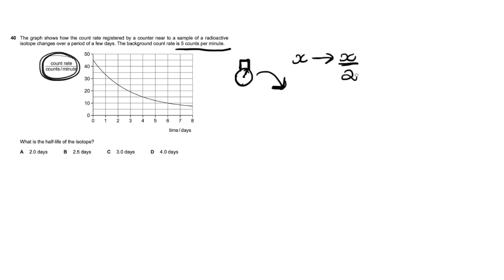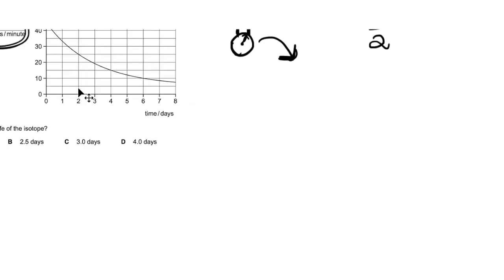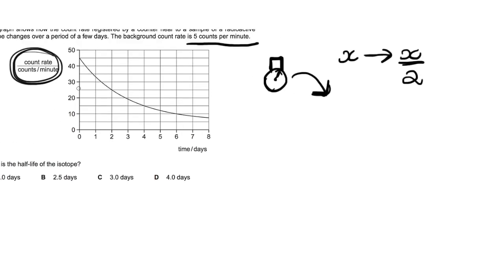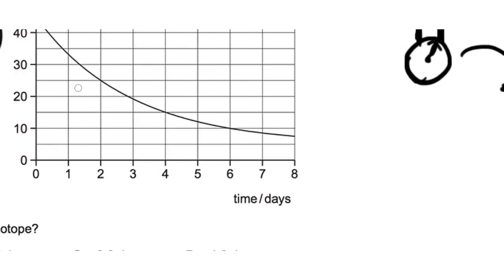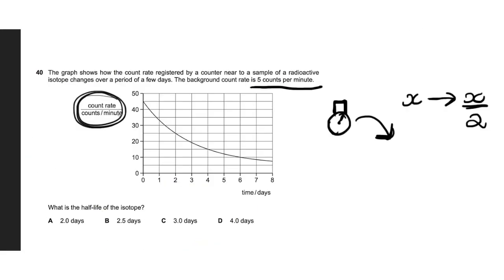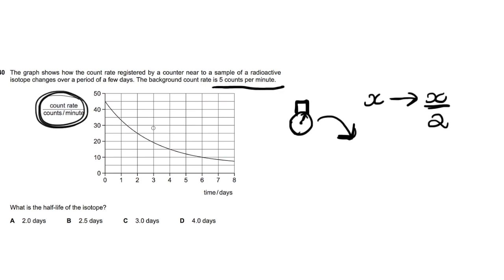Now, you could possibly make this mistake here. You could possibly make the mistake of just taking this value of 45 counts per minute and halving it to get 22.5, and then just comparing that value—22.5 is roughly here—and saying okay that amounts to 2.5 days, 2.5 is the answer. But that's wrong.